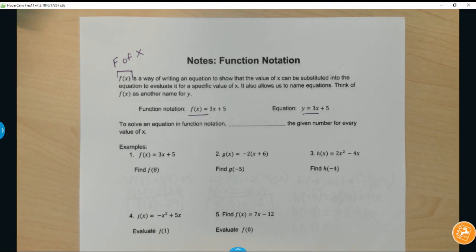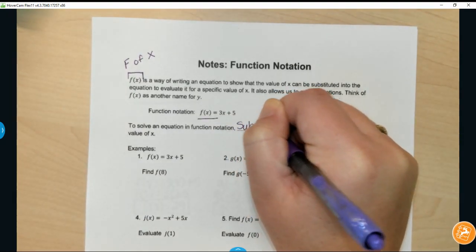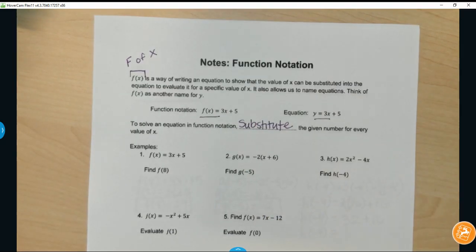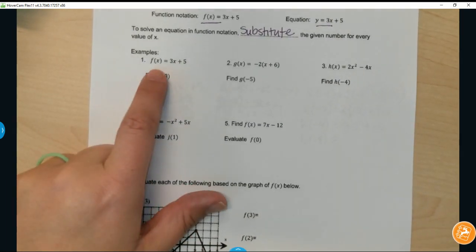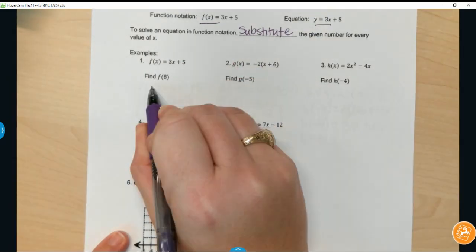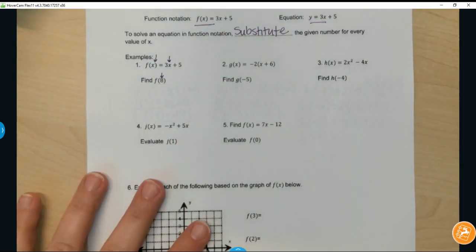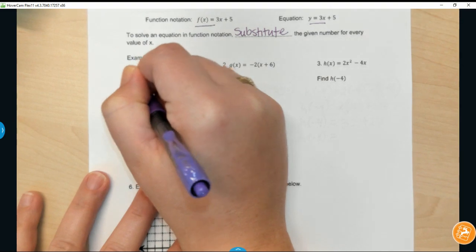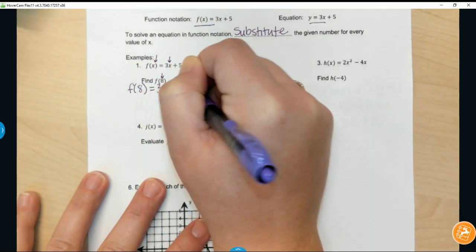To solve an equation in function notation, you want to substitute the given number for every single value of x you see. So if we look at that first example, f(x) equals 3x plus 5, I'm going to find f(8), meaning I'm going to take that value 8 and plug it in anywhere I see an x value. So f(8) equals 3 times 8 plus 5.